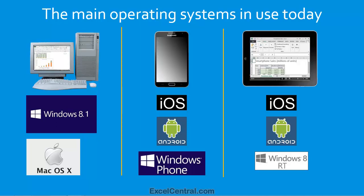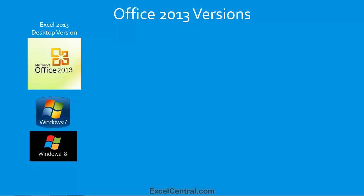So now you have a good overview of all of the operating systems in general use today. Let's move on to Office 2013 versions. First of all, there's the Desktop version of Excel 2013. This is the full version of Office that you probably have installed on the hard drive of your PC. The Office 2013 desktop version will only run on the Windows 7 and Windows 8 operating systems. There's also a version of Office 2013 that runs on the Windows 8 RT operating system, which is the operating system installed on some pad devices. This is almost identical to the full desktop version, but there are some small differences caused by the technical limitations of Windows 8 RT.